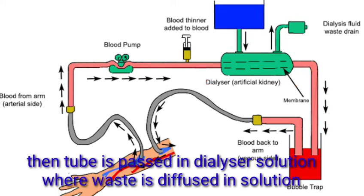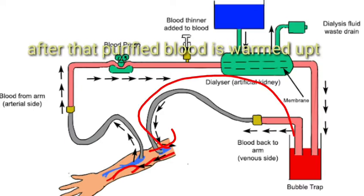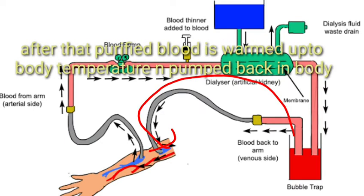Dialyser fluid mein waste material diffuse hone ke baad, the purified blood is warmed and then pumped back into the body. Warm isliye kiya jata hai kyunki aapki body temperature ke according hona chahiye taaki koi problem na ho. Then patient ki body mein is purified blood ko pump back kar diya jata hai. So this is the process of hemodialysis.